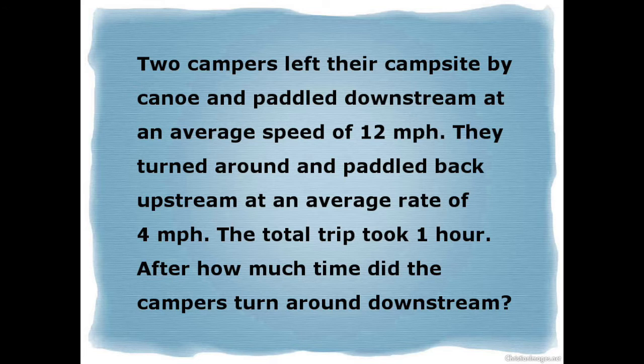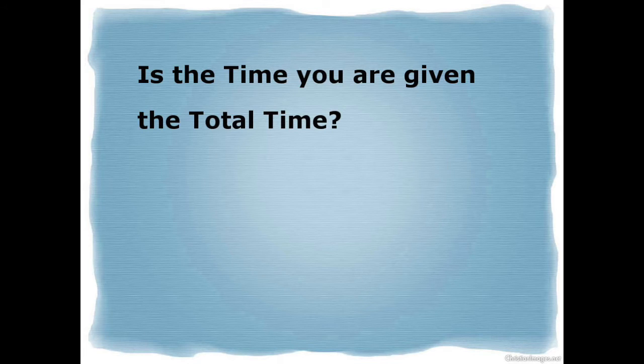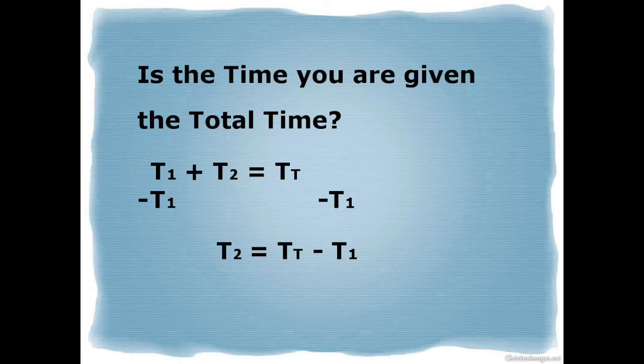Now if you look at that word total that should be a tip off. Because that is going to be the total time. Now that's very common for total time problems. Is somebody went here and then they went back. Somebody hiked up a mountain and then they ran back down. And they were gone for 14 hours. Or in this case they were gone for 1 hour. So is the time you are given the total time? If it is, T1 plus T2 equals T total. Subtract T1 from both sides just like we did for distance. And we are going to end up with T2 equals T total minus T1. And of course you can end up with T1 equals T total minus T2. It doesn't matter which way you do it. Just make sure that the total is positive and the T1 or the T2 is subtracted.